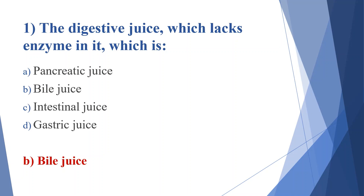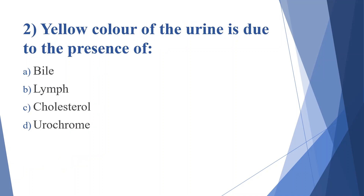Second question: yellow color of the urine is due to the presence of. Option A: bile. Option B: lymph. Option C: cholesterol. Option D: urochrome. Answer is option D, urochrome.